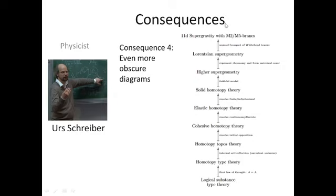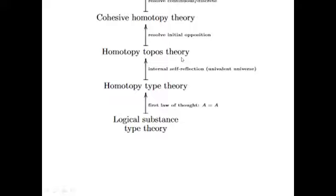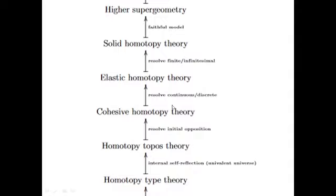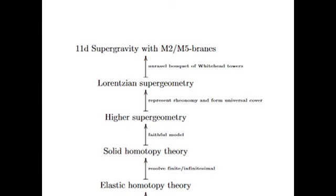We get another even more interesting diagram where here Schreiber explains how his model of string theory is built up in various steps. So let's look at that. At the low level, we have logical substance type theory. When we formulate the first law of thought, which is A equals A, so Ayn Rand would be very proud of this. And when we have homotopy type theory. And when you do internal self-reflection in a universe to get homotopy topos theory. When we resolve the initial opposition between being and non-being to get cohesive homotopy theory. When we resolve the contradictions between continuous and discrete. Between becoming and non-becoming to get elastic homotopy theory. When we resolve the contradictions between finite and infinitesimal. So that's the level of this eatal reduced and infinitesimal stuff to get solid homotopy theory.